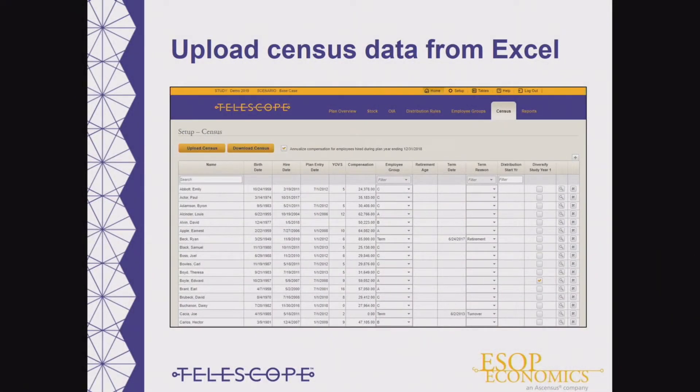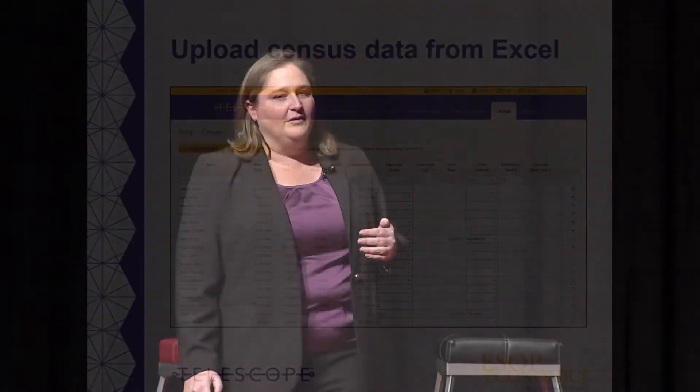The first step to creating a repurchase obligation study through Telescope is to upload your census and account balance information. As part of your initial setup, we will format and upload your census data using your most recent allocation file. From then on, when you update your studies, you will use our downloadable Excel template. You can change your census information in Telescope at any time. The sort, search, and filter functionality allows you to find and edit information as needed — for example, you can specify specific retirement age assumptions right in the software.